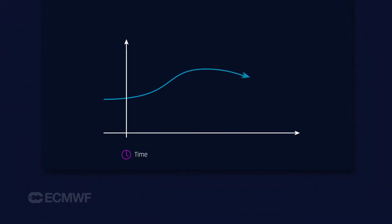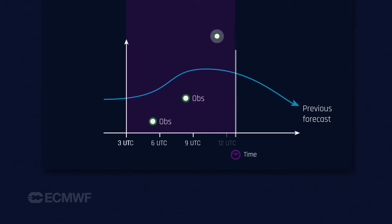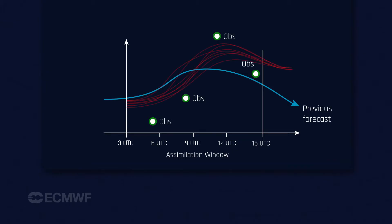We first run a short-range forecast and then we wait until we receive all the observations within an assimilation window. Once we have received all the observations, we go back to the beginning of this window and adjust the previous forecast based on all the received observations. We go back 12 hours and readjust the previous forecast to do an analysis of the last 12 hours, and from that point we start running the forecast once we are happy with the result.